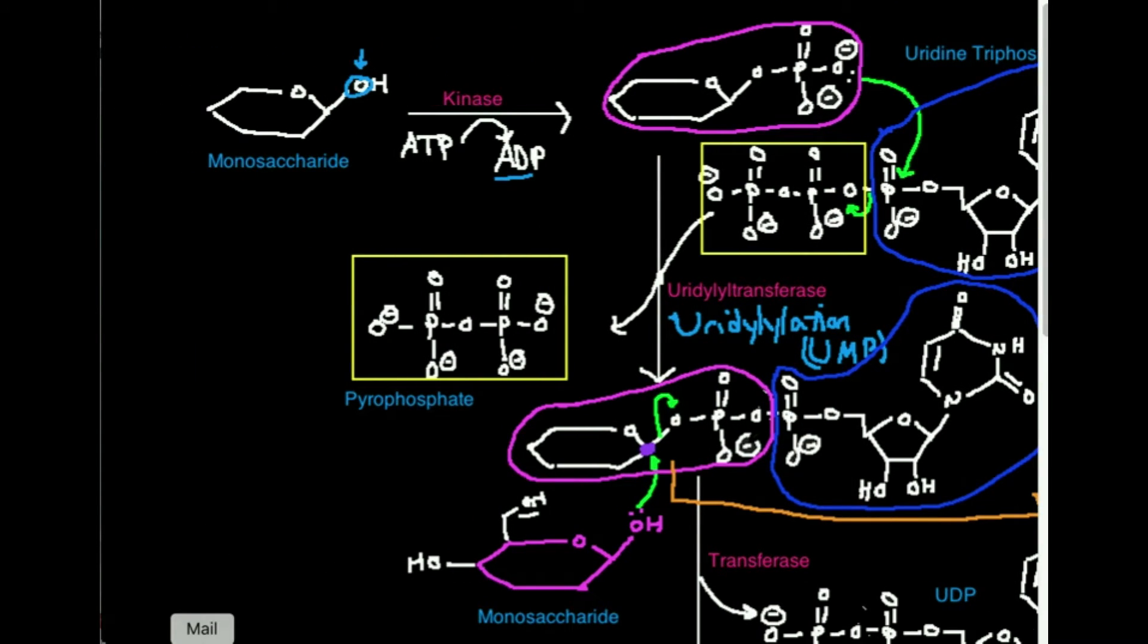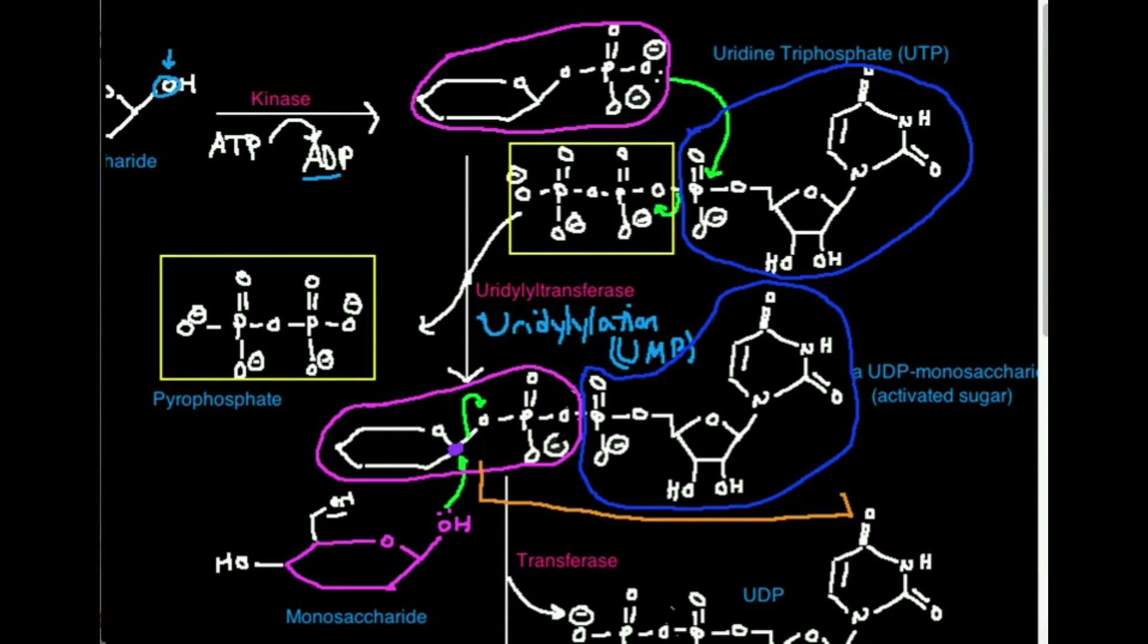And this is the most common strategy that's used by the cell. So let's do a quick recap. We're going to phosphorylate a monosaccharide, making a monosaccharide phosphate like this.